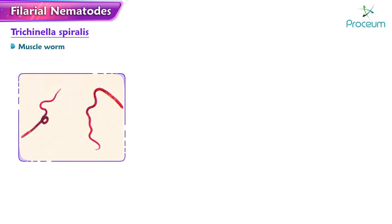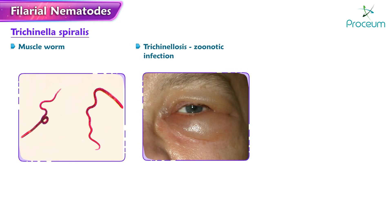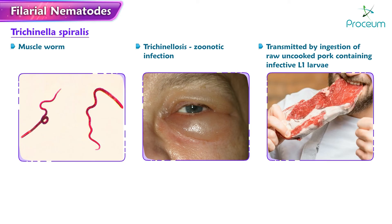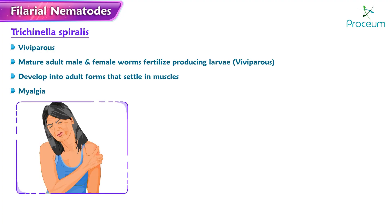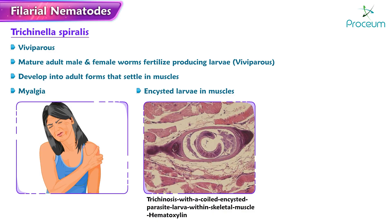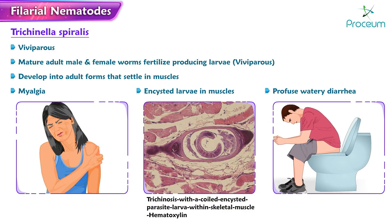Trichinella spiralis is also known as a muscle worm. It causes trichinellosis, which is a zoonotic infection transmitted by ingestion of raw or uncooked pork containing infective L1 larvae. It is viviparous — mature adult male and female worms fertilize and produce larvae, which develop into adult forms that settle in muscles. Clinically, it manifests as myalgia due to the deposition of encysted larvae in muscles, and can also cause profuse watery diarrhea.